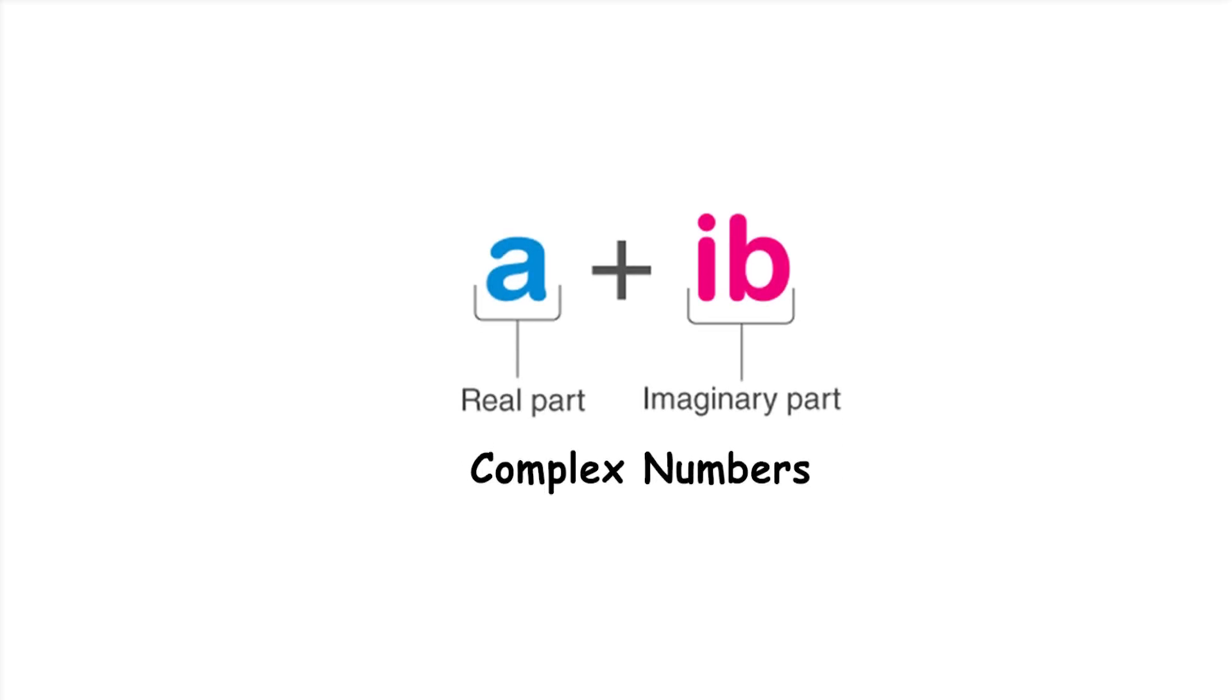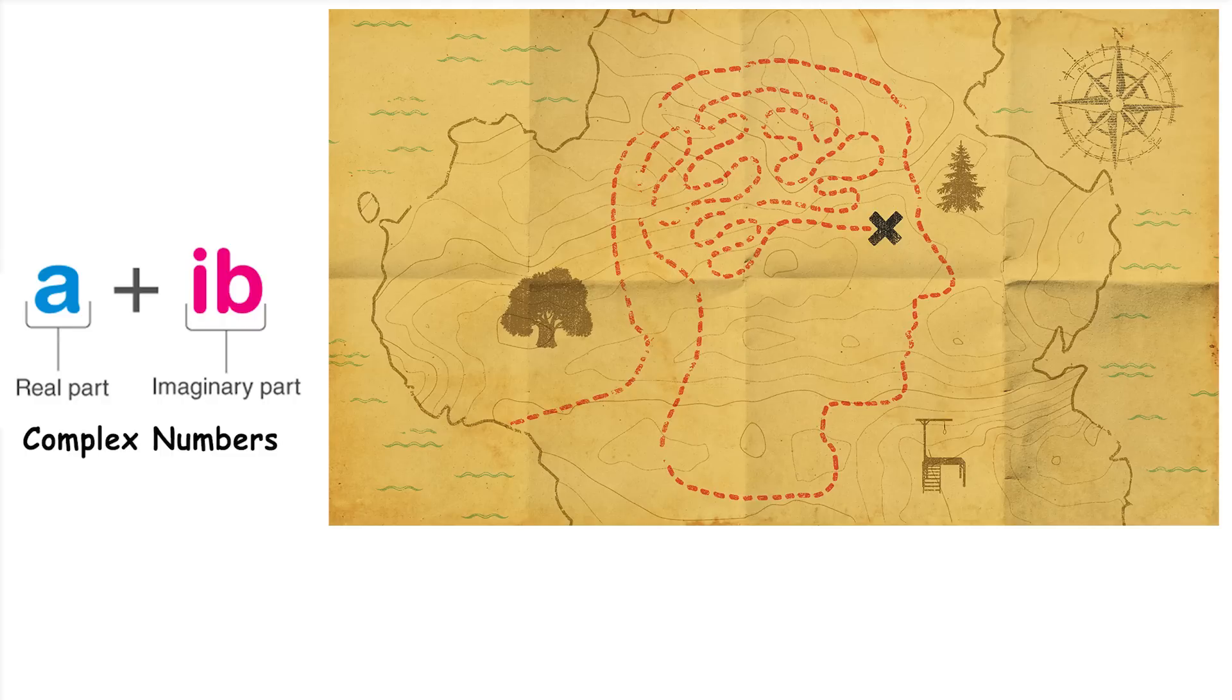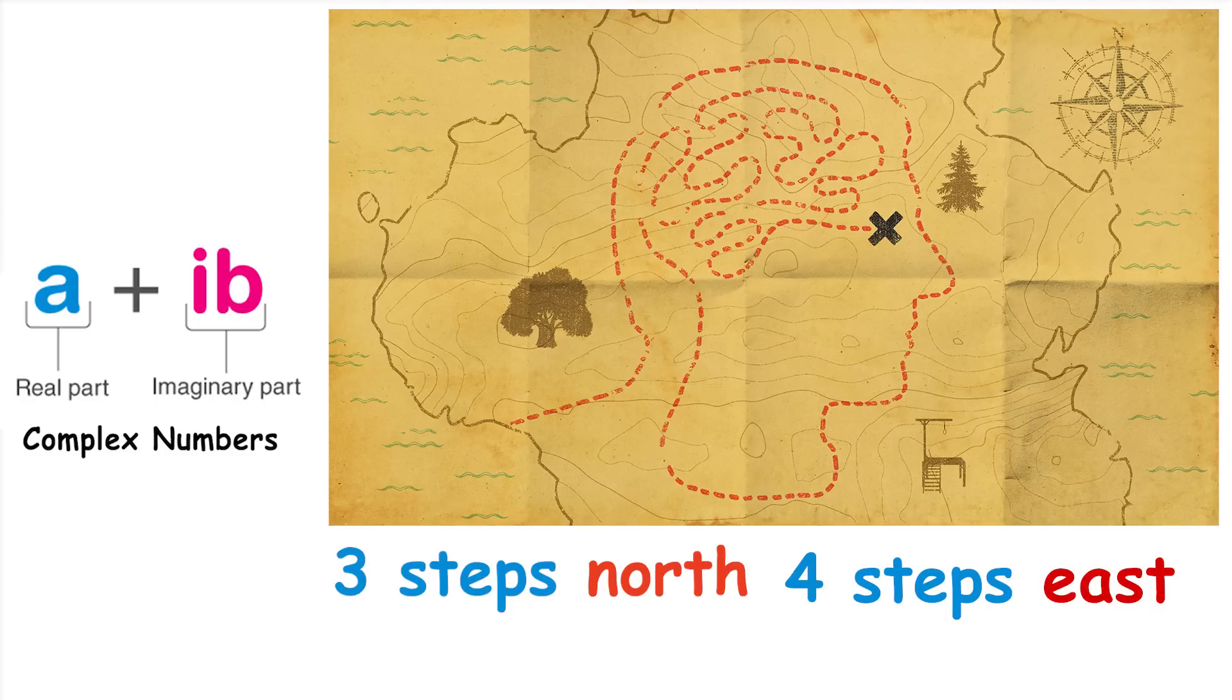Complex Numbers. Complex numbers extend the concept of one-dimensional numbers to two dimensions. Think of complex numbers like pairs of numbers, similar to coordinates on a map. Imagine you have a treasure map that tells you how far you are from a treasure in two directions: north-south and east-west.